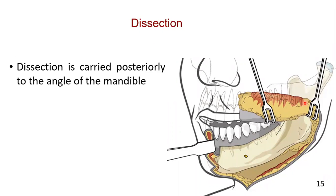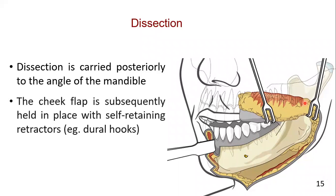Dissection is carried posteriorly to the angle of the mandible, or as far as needed to provide access for the oncological resection and placement of a mandibular reconstruction plate when indicated. The cheek flap is subsequently held in place with self-retaining retractors, for example, dural hooks.